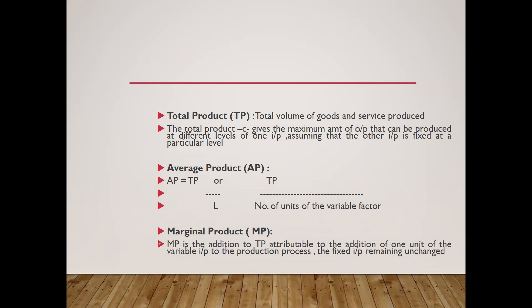Total product is the total volume of goods and services produced. It gives the maximum amount of output that can be produced at different levels of one input, assuming the other input is fixed at a particular level. Average product (AP) is total product divided by the number of units of the variable factor. Marginal product (MP) is the addition to total product attributed to the addition of one unit of the variable input, with the fixed input remaining unchanged.